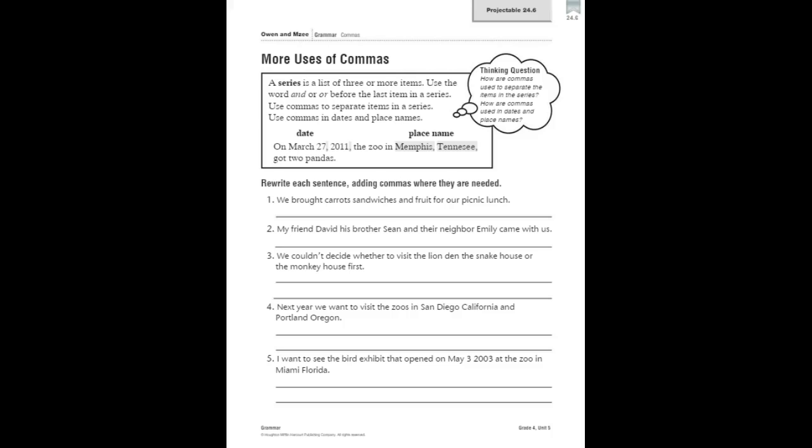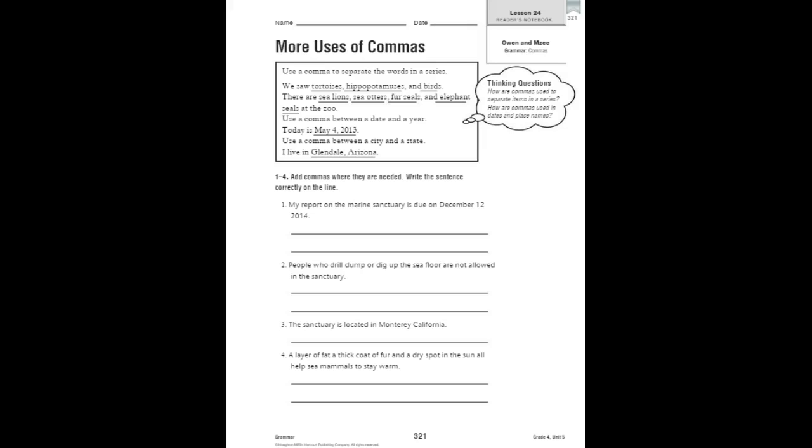We're going to turn right now to your reader's notebook page 321. You're going to practice using commas to separate items in a series and dates and place names. You're going to add commas where they're needed and write the sentence correctly on the line for one through four. So: my report on the marine sanctuary is due on December 12, 2014. Where would you put your commas in that sentence? We have a date, so I just need to use the comma between the date and the year.